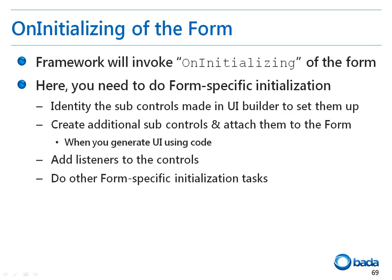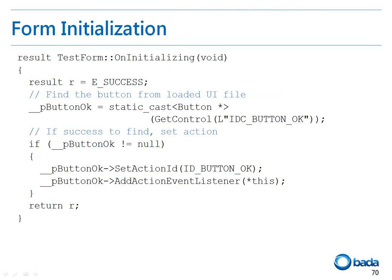Now let's look at the onInitializing function of the form created by the template. There is an OK button at the top of the form. This button has the ID IDC_button_OK. This code shows the method to acquire the pointer for the button by using its ID. If the button is acquired successfully, the button's ActionID and ActionEventListener to handle the button events are set.